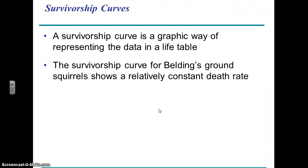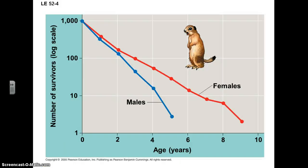From life tables you can generate survivorship curves, which are just a graphical way of looking at survivorship. For example, these squirrels show a relatively consistent decline through time in a given group of individuals born at a particular time.